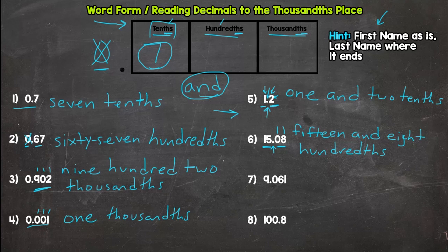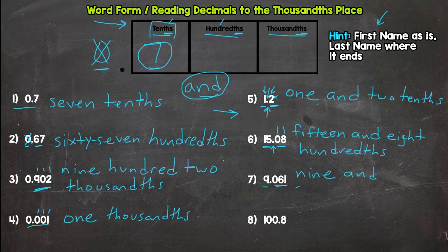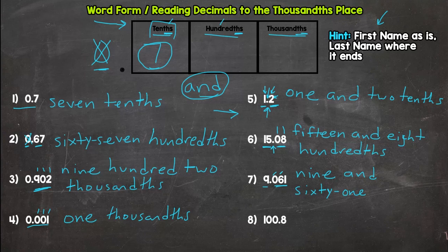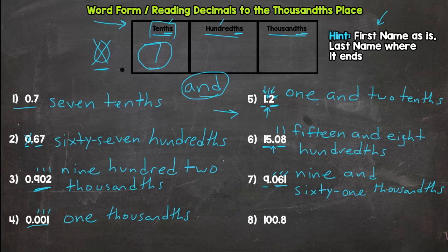Number seven: nine wholes, so we say nine, then and. Read as is: sixty-one. Where does its last name end? Tenths, hundredths — hopefully you said thousandths. So the answer is nine and sixty-one thousandths.